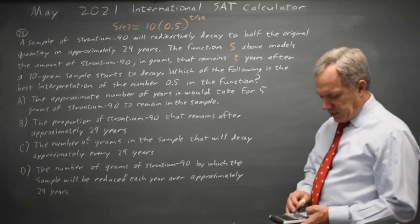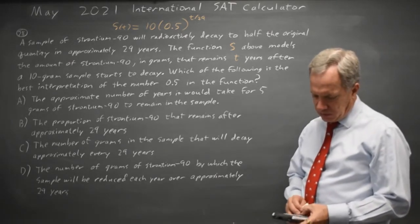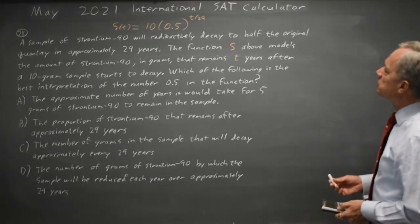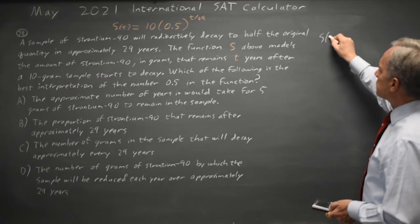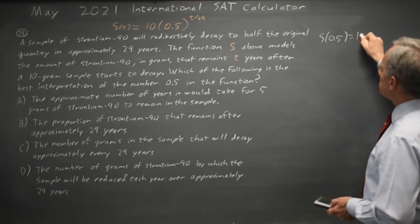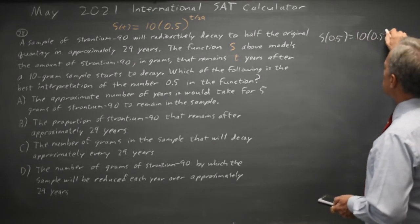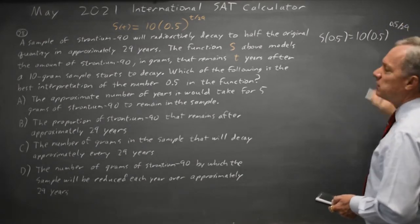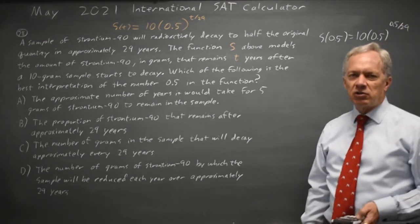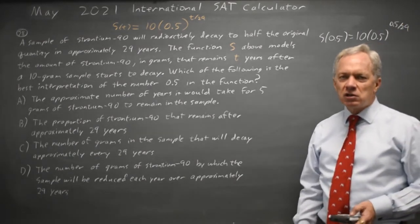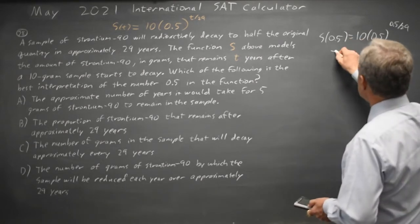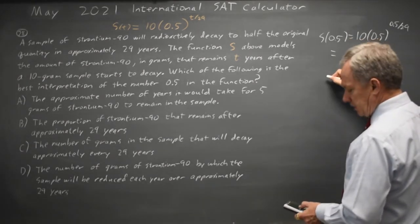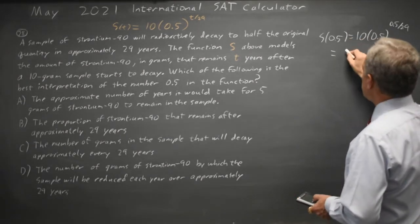If I look at t equals 0.5, s(0.5) equals 10 times 0.5 to the 0.5 over 29. You can do that on either your graphing calculator or a scientific calculator, and I get 9.88.